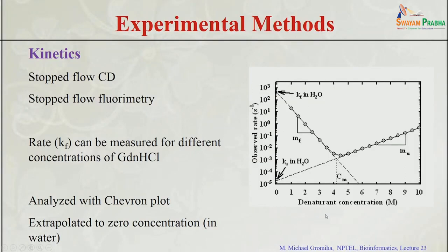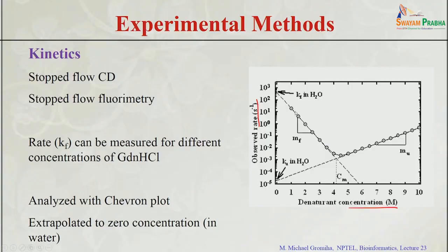How do we measure the folding rate? There are various methods — mainly stopped-flow CD and fluorimetry — which give you the rate at different concentrations. On the x-axis we give different concentrations of guanidinium chloride, and on the y-axis we show the observed rate. You can see from 1 to 10 molar: this is the folding region and this is the unfolding region. We extrapolate to zero concentration to get the folding or unfolding rate in water, for uniform data across different proteins and mutants. This can be analyzed using the Chevron plot.